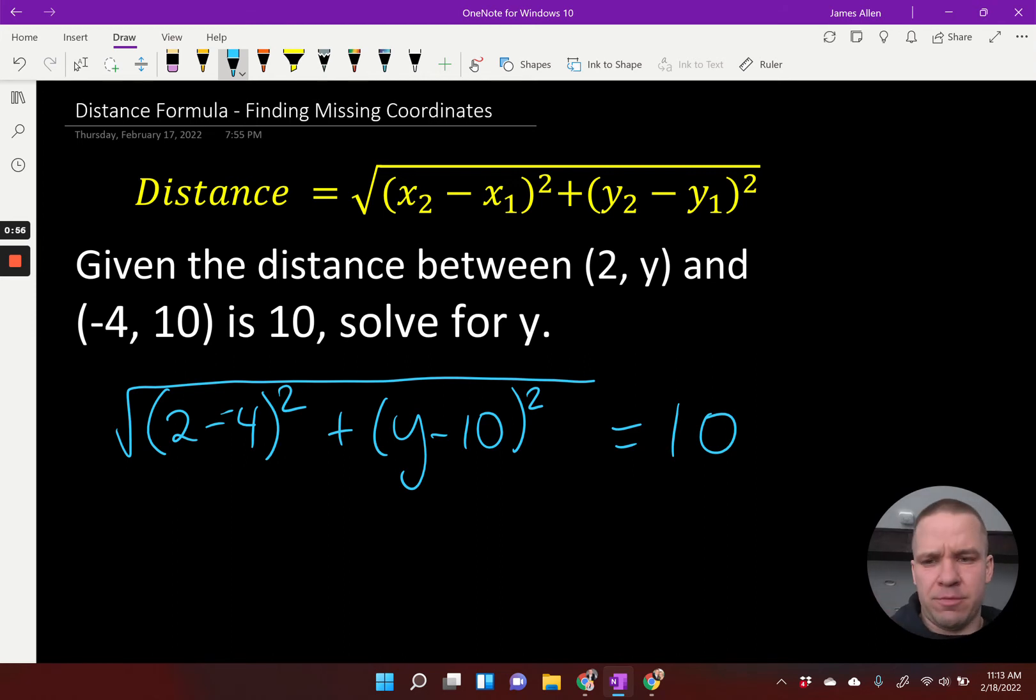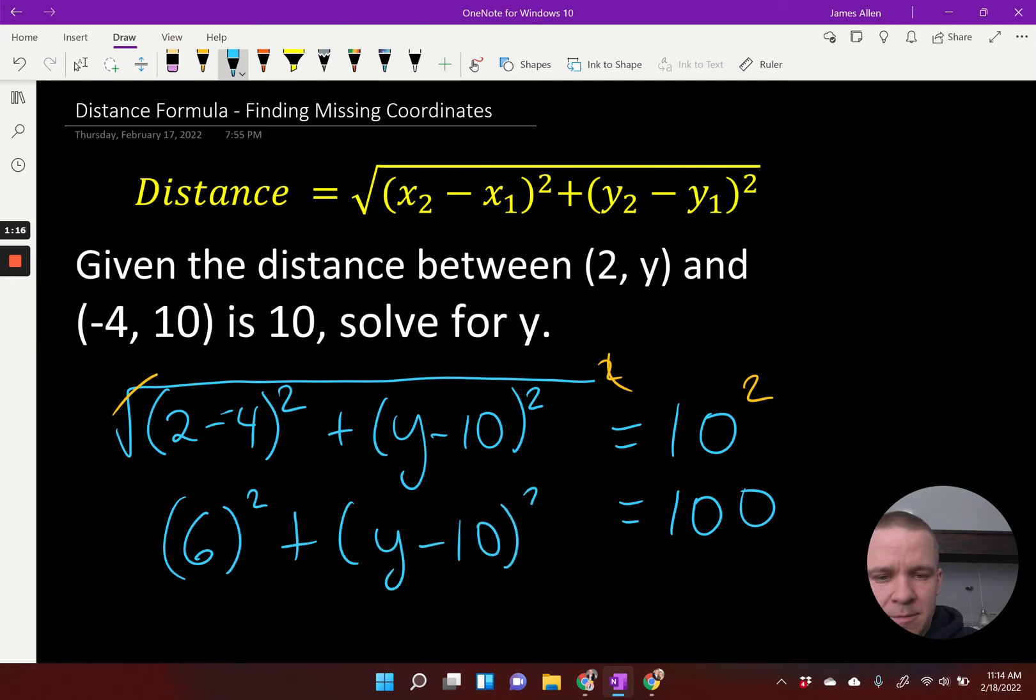Now I need to do a little bit of algebra. So what can I do first? I'm going to square both sides here because that's going to get rid of my square root. And now I've got 100 on this side, and then I can do a little bit of simplification there. 2 minus -4 is 6, so that's going to be 6 squared plus, and I'll leave this as is.